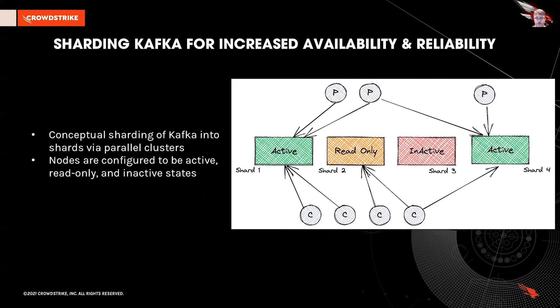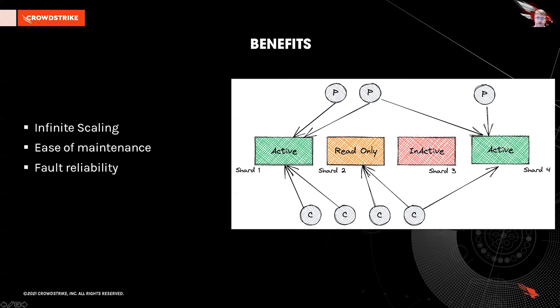Our standard producer and consumer libraries were updated to support one of three shard configurations: Active, meaning the shard is ready for reads and writes; Read-only, where the shard is open for only reads — an interim state typically used to drain events before setting a shard to inactive; and Inactive, useful for maintenance or for quickly dropping activity from a shard while troubleshooting. This sharding strategy afforded our team three main benefits: infinite scaling through nearly infinite horizontal scaling of Kafka production and consumption; ease of maintenance, allowing tasks with no downtime by shifting traffic from one shard to others; and fault reliability, enabling quick failover through a config update if one shard becomes unavailable.